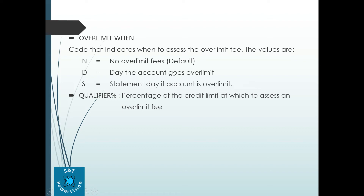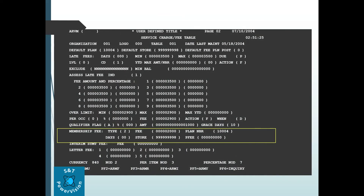S means statement day — if the account is over limit, the over limit fee is posted on the next cycle. The Qualifier Percentage is the percentage of the credit limit at which to assess an over limit fee. For example, if the credit limit is one lakh and the percentage is set to 10, then when the customer spends more than one lakh ten thousand, that day the account qualifies for the over limit fee and it will be posted based on the parameter set — either N, D, or S.